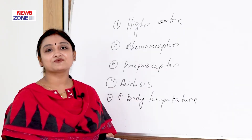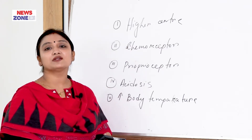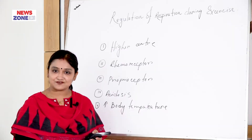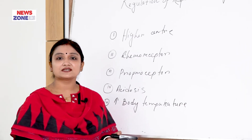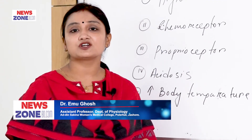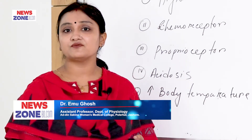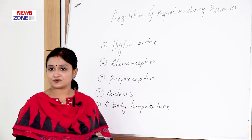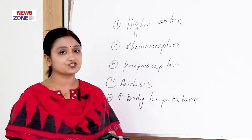In the previous lecture, I told you about the regulation of respiration. We have already completed the normal regulation, which is divided into two types: nervous regulation and chemical regulation. We have already discussed the respiratory center, their location, their function, and the effect on respiration if there is a section over different parts of the brain.